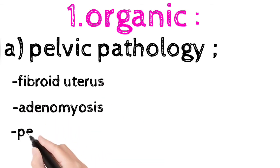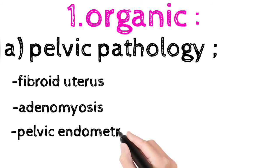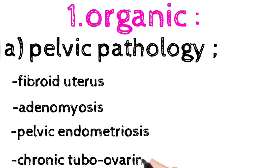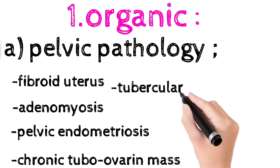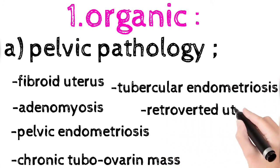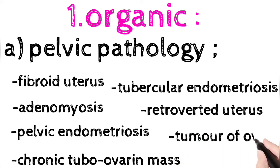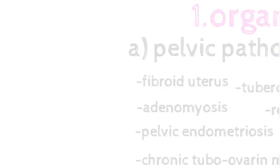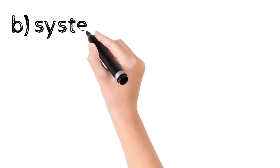First one is fibroid uterus, second one is adenomyosis, third one is pelvic endometriosis, chronic tubo-ovarian mass, tubercular endometriosis, and retroverted uterus. The last one is tumor of the ovary.